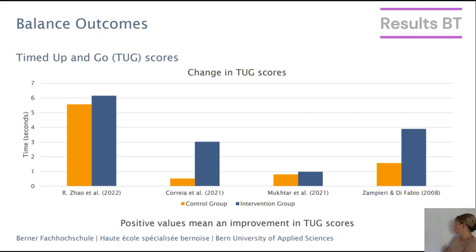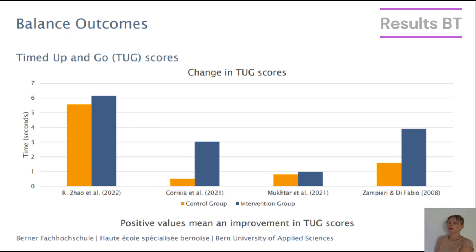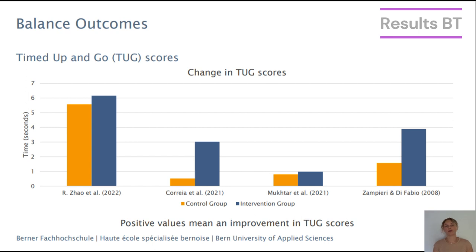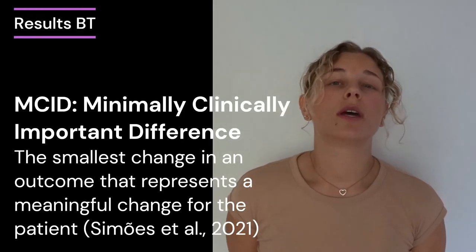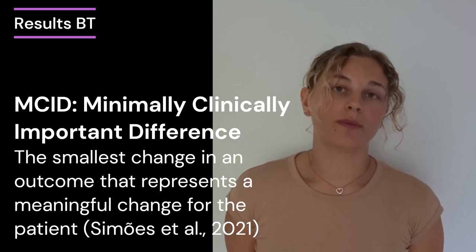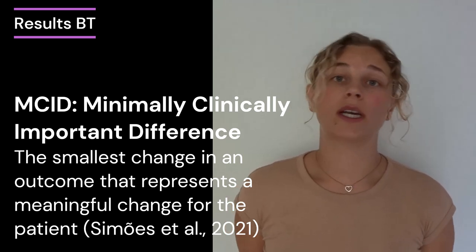Looking at the Timed Up and Go scores, four studies used this measure. Sao et al. and Gray et al. studied stroke patients, Mokter et al. studied cerebellar ataxia patients, and Sampieri and Di Fabio studied progressive supranuclear palsy patients. The tendency is that the intervention group improves better than the control group, but only the two stroke studies showed significant results. However, no MCID is known for the Timed Up and Go, so we cannot determine whether these effects are clinically important.